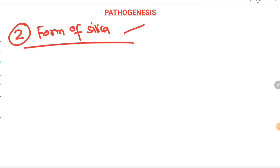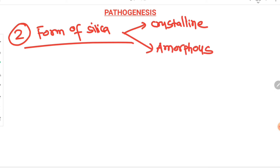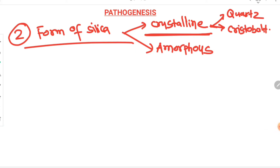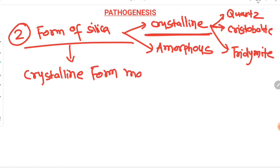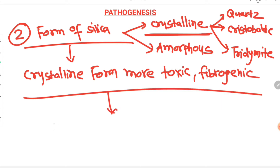Now let's see the pathogenesis. There are two forms of silica particles: crystalline and amorphous. Crystalline is more fibrogenic. There are three varieties of crystalline silica — quartz, cristobalite, and tridymite. Among these, quartz is the most toxic and most fibrogenic, and it is the most common cause related to the development of diffuse interstitial fibrosis in silicosis.